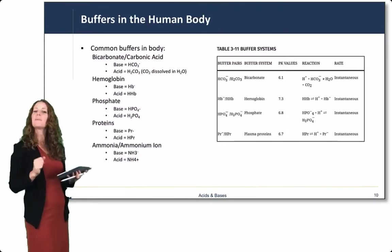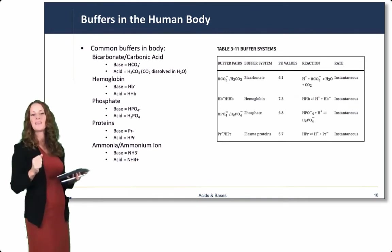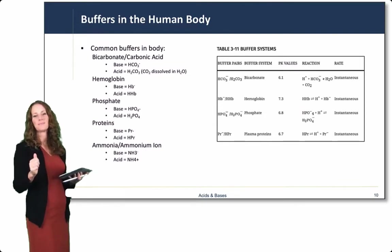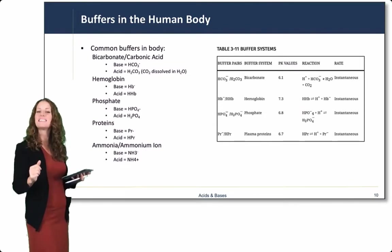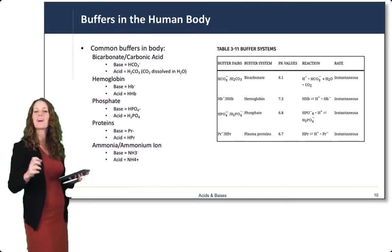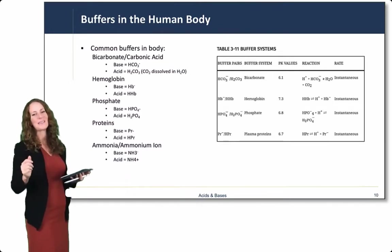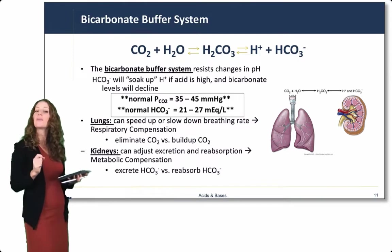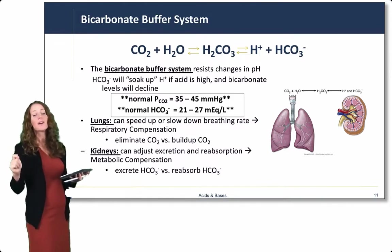Here's some examples of common buffers in the body: the bicarbonate carbonic acid, hemoglobin, phosphate, proteins, and ammonia-ammonium ion buffers. Here I've also listed the acid and base conjugate pairs so that you can see them. We're going to focus on the bicarbonate buffer system as a very common and very important example of buffers in the body.